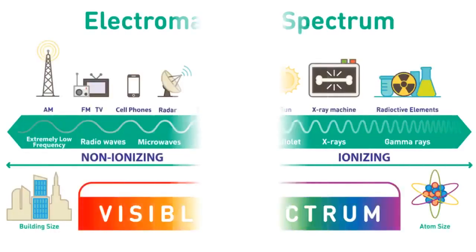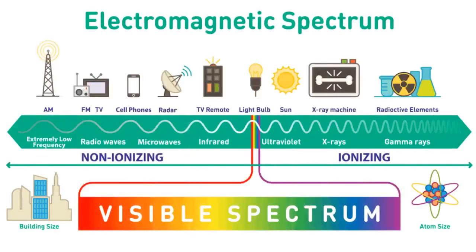Waves in the electromagnetic spectrum include radio waves, microwaves, infrared, visible light, ultraviolet rays, x-rays, and gamma rays, in order of decreasing wavelength. The waves in the various regions in the EM spectrum share similar properties but differ in wavelengths, frequency, energy, and method of production.